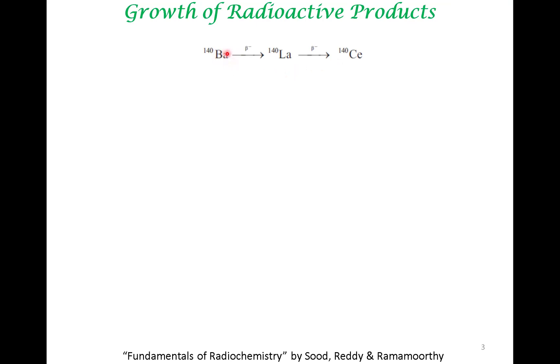the first element has beta decay pathway to this element that is beta minus decay. And then this element beta decays further to form this element, cerium. So because these are all beta decays, atomic number would change. Therefore, barium becomes lanthanum, lanthanum becomes cerium, but the atomic weight remains the same. So how do you think about this kind of system?